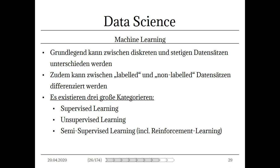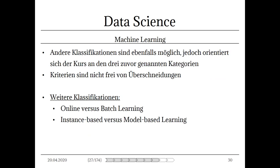Es existieren drei große Kategorien im Machine Learning: Supervised Learning, Unsupervised Learning und Semi-Supervised Learning inklusive Reinforcement Learning – also überwachtes, unüberwachtes und halb überwachtes Lernen. Man kann auch andere Klassifikationen fahren wie Online vs. Batch Learning oder Instance-Based vs. Model-Based Learning, aber wir orientieren uns an diesen drei Kategorien. Seien Sie sich bewusst, dass Überschneidungen möglich sind – sie sind nicht eins zu eins abgrenzbar.